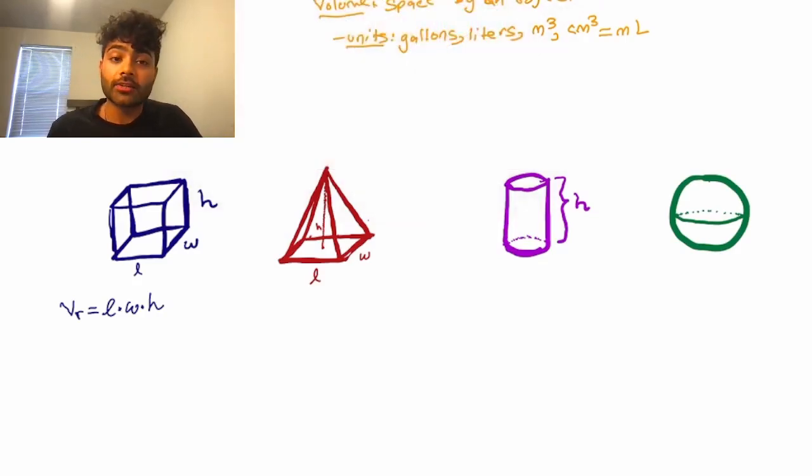Next, we have a rectangular pyramid. And v sub p, or volume of the pyramid, is equal to 1 over 3, which is a constant, times length times width times height.